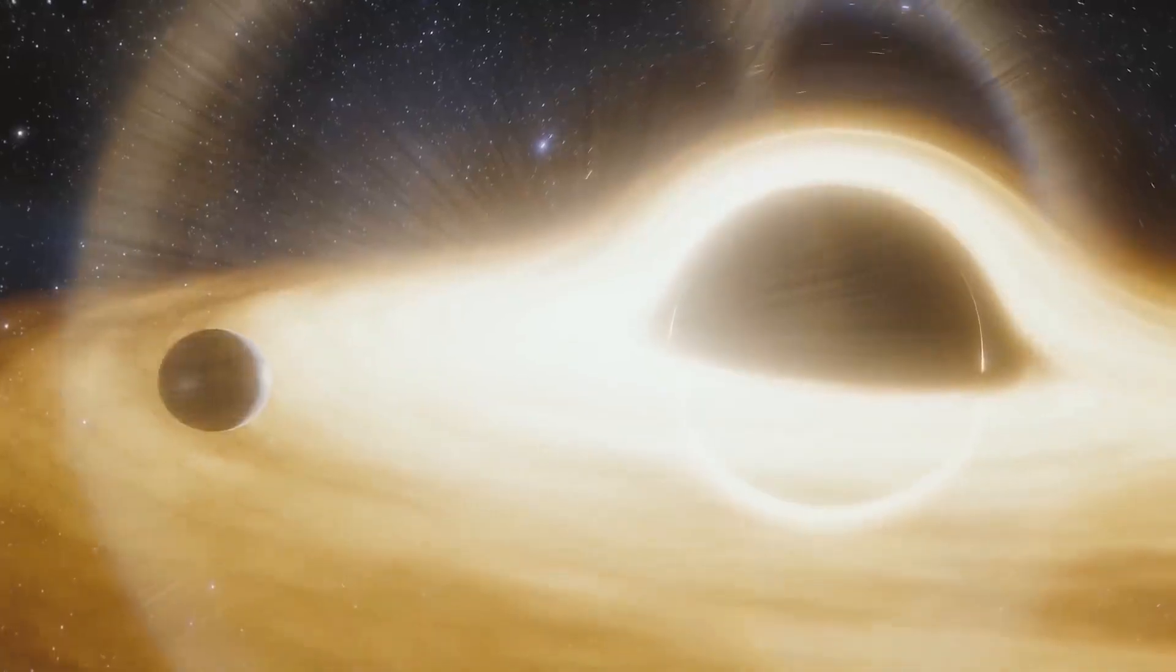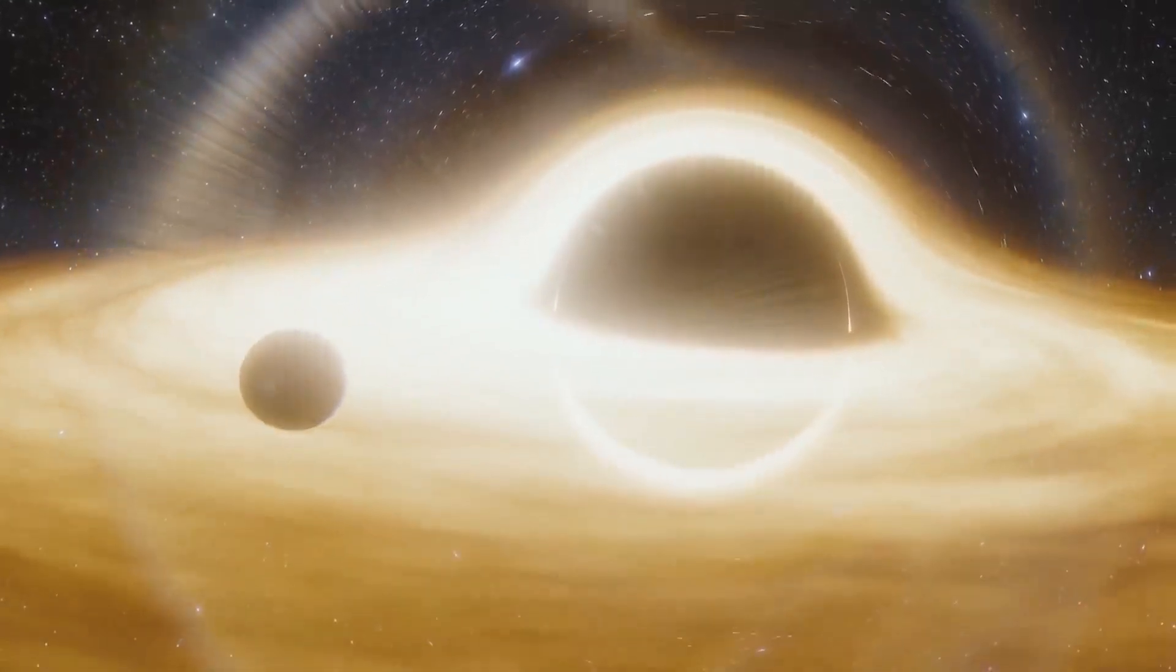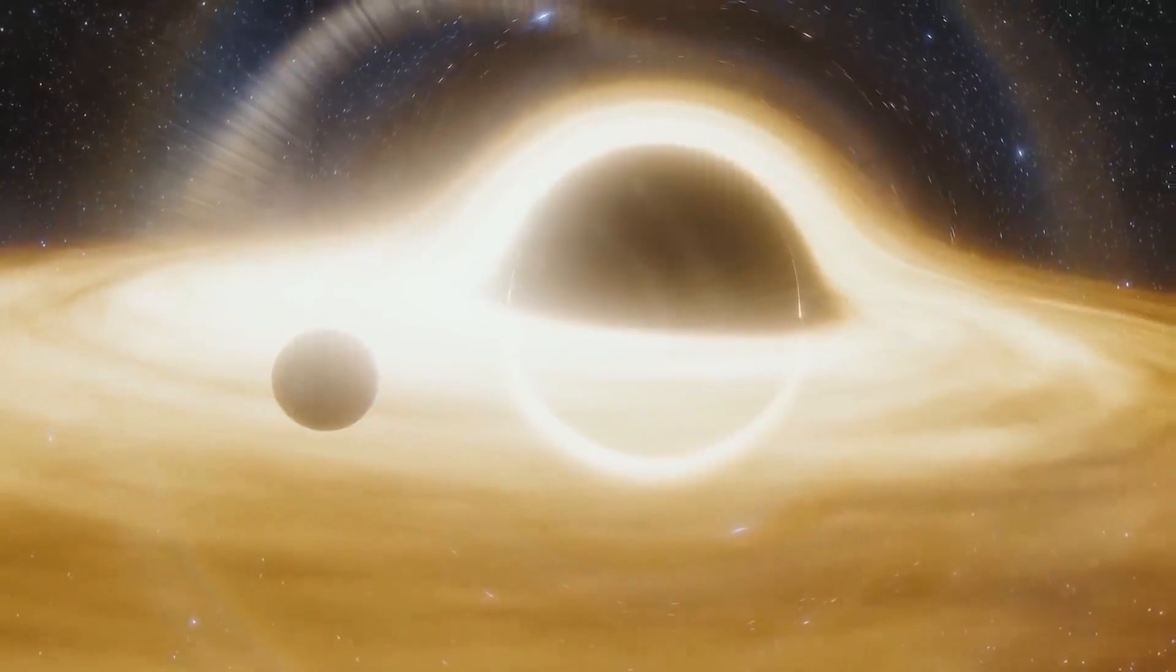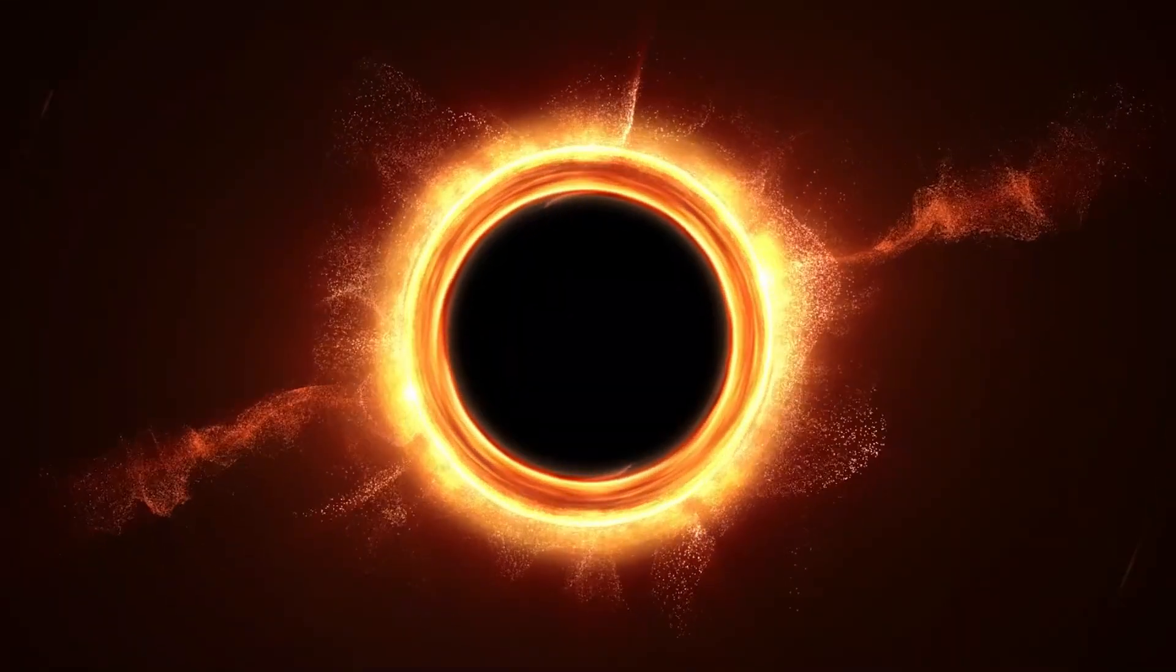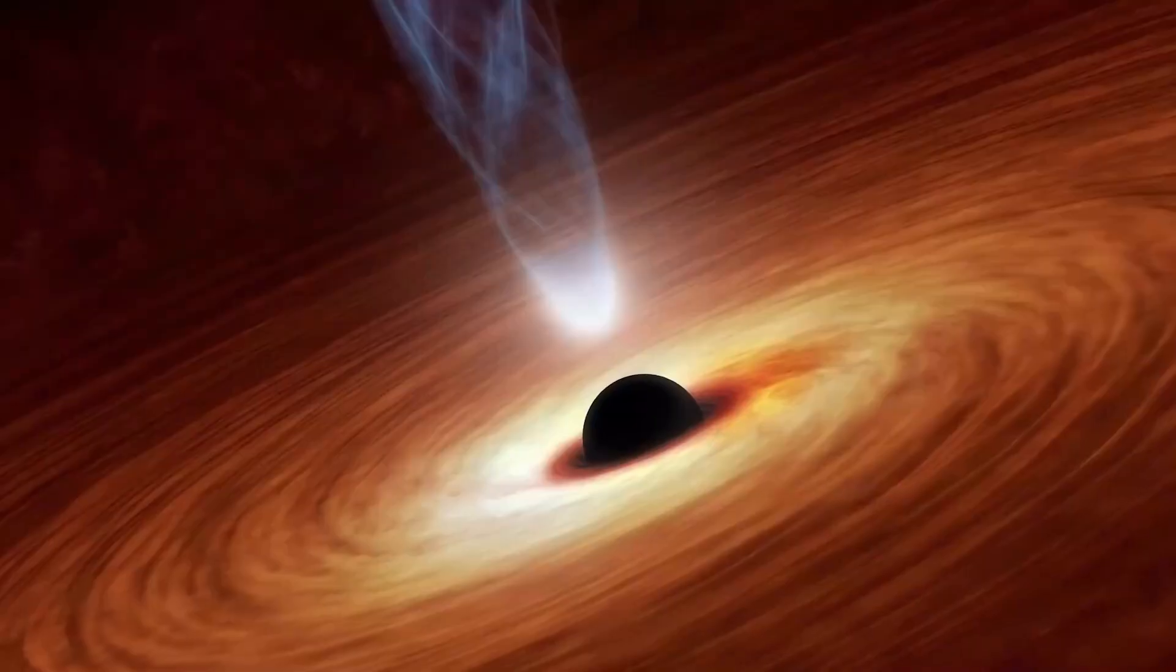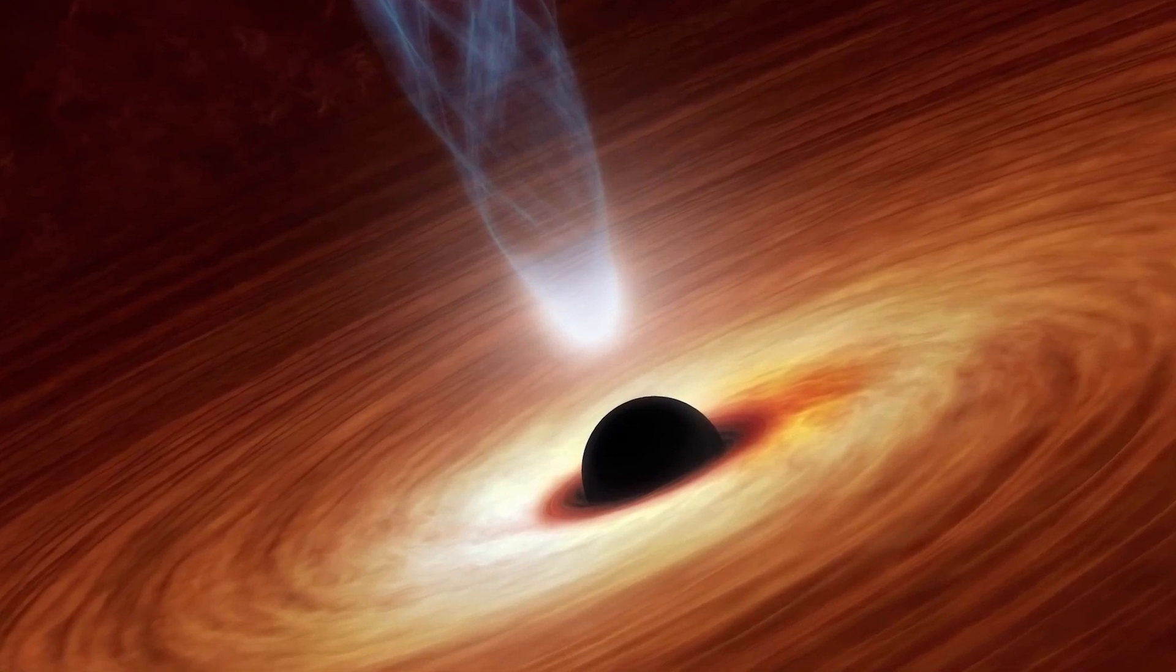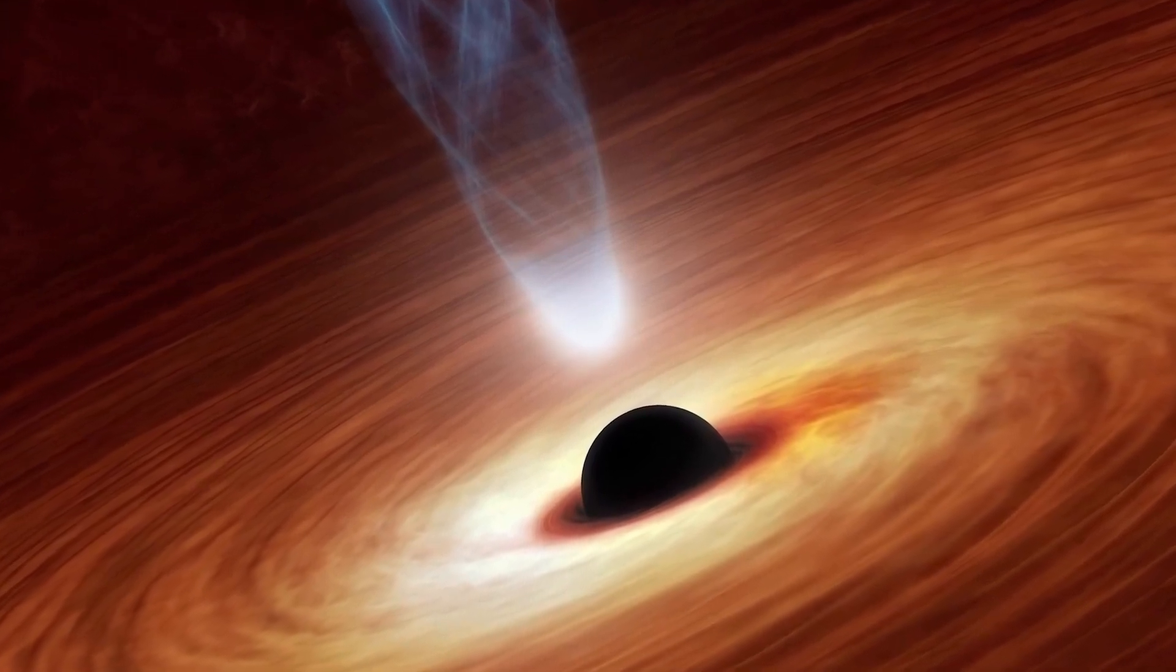Studies have shown that black holes are not immediately observable, since they neither emit nor reflect light. Nonetheless, their presence may be inferred from their impacts on the adjacent matter. When stuff falls into a black hole, it warms up and releases radiation that telescopes can detect. This radiation may provide information about the black hole's characteristics, including its mass and spin.